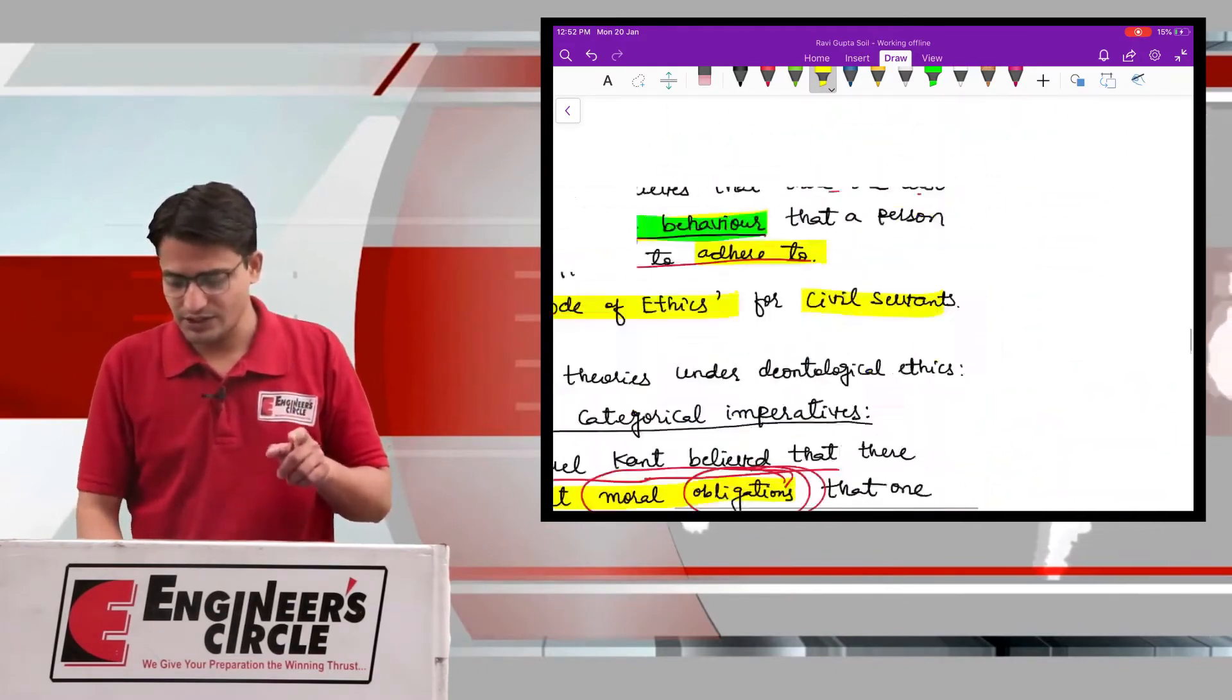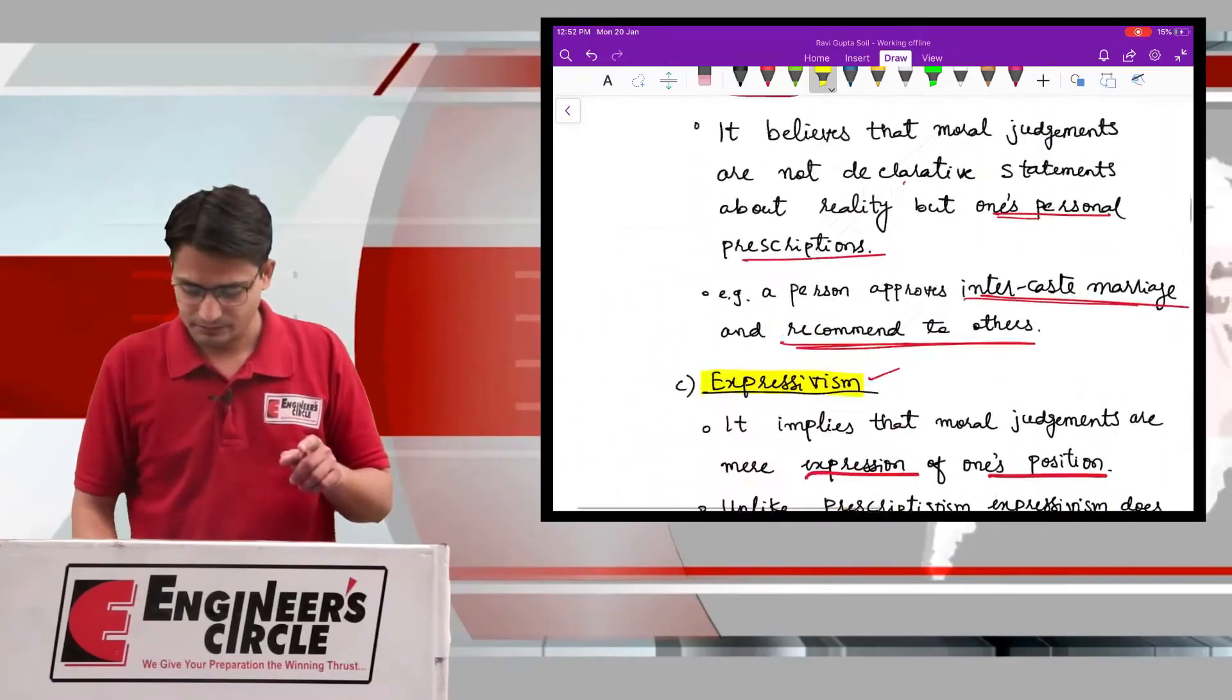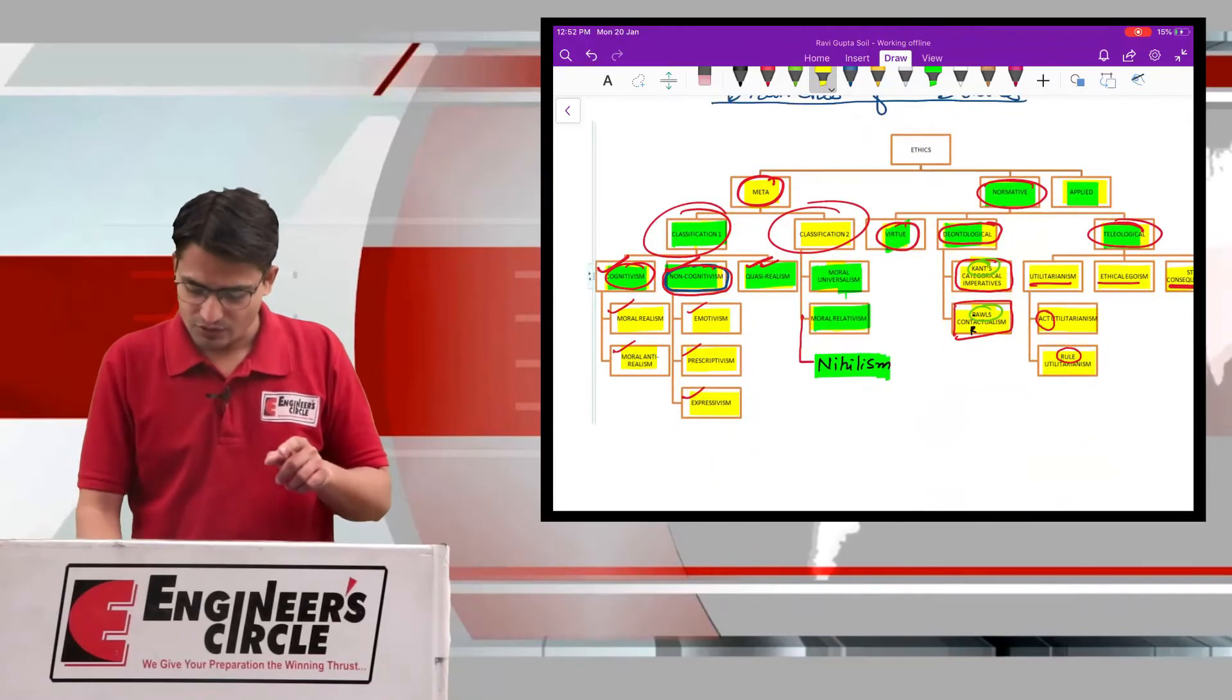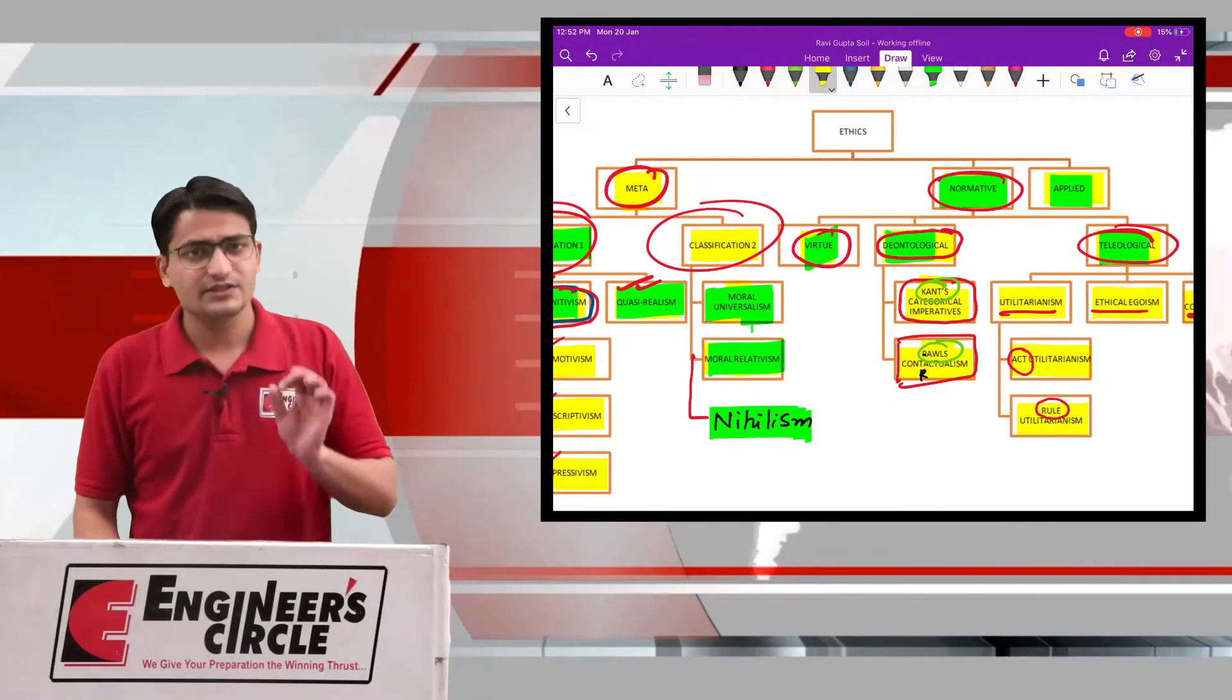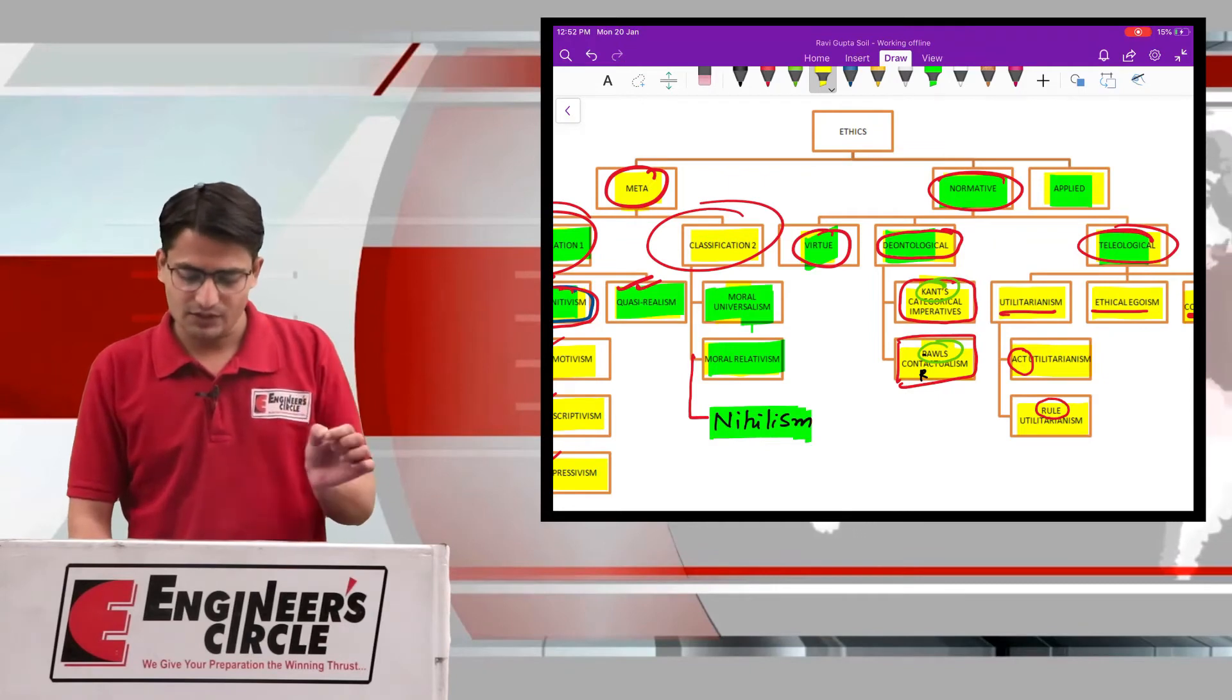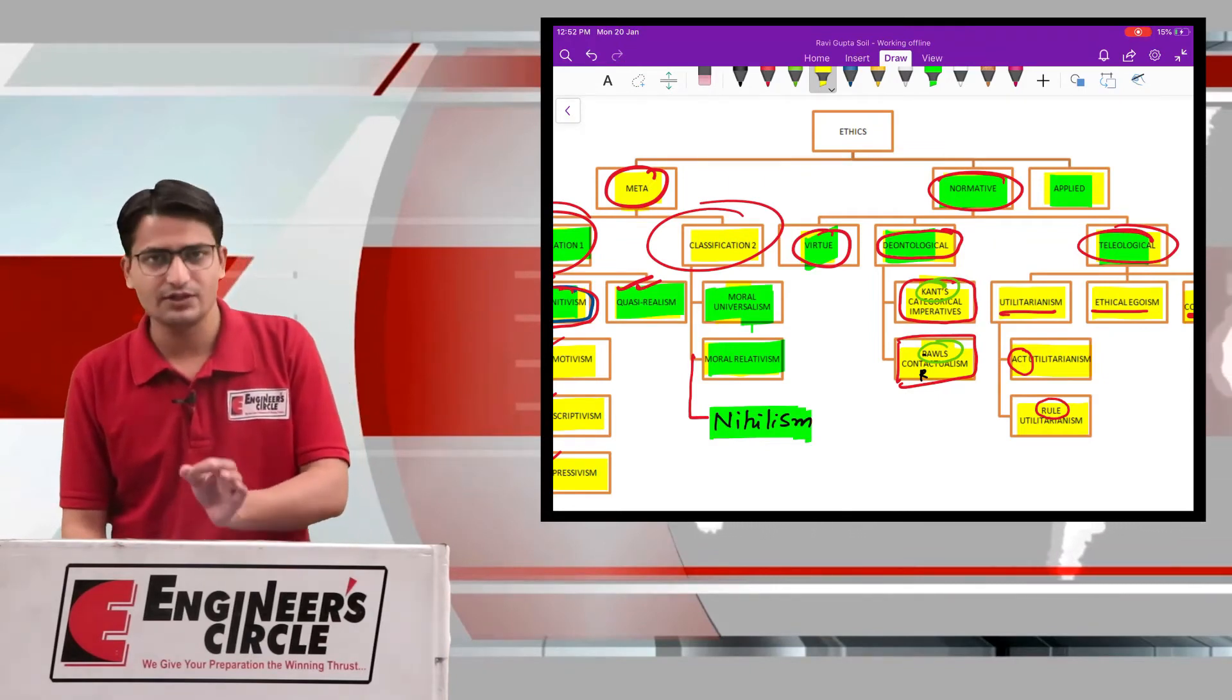Now, coming back to our original table of all the ethical theories. We were discussing the normative part, normative ethics, and we covered virtue ethics, then we covered deontological ethics, and then we covered teleological ethics.